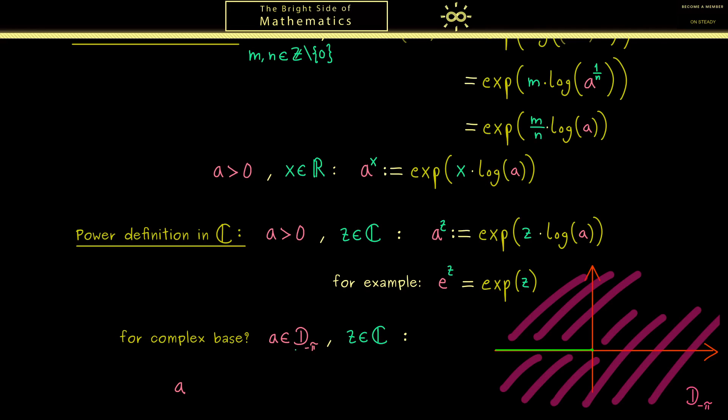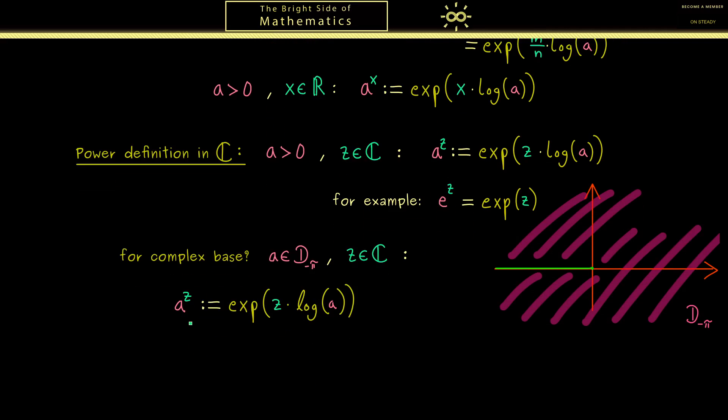With this we can say that for any exponent z, we can define a to the power z. As before, we have the exponential function of z times, and now the complex logarithm of a. When we agree that we take the principal value of the logarithm function, then this power is well-defined. However, then we should also speak of the principal value of the power function. Therefore, please always keep in mind that such a power with two complex numbers involved could represent a lot of meaningful values. The name principal value tells us that we pick exactly one of them, and then we have a well-defined complex number. This means that we can calculate with it.